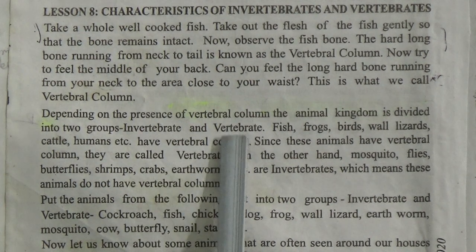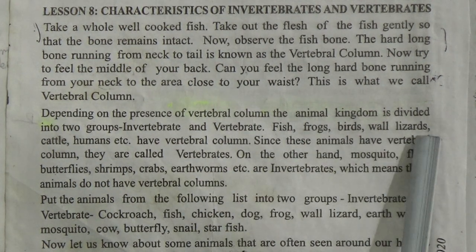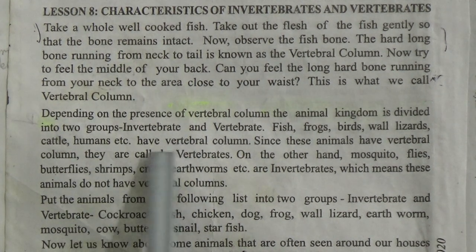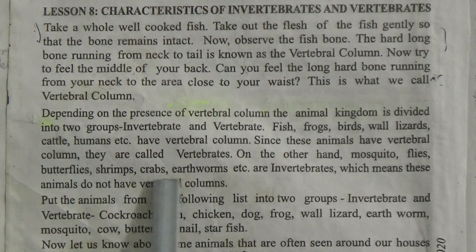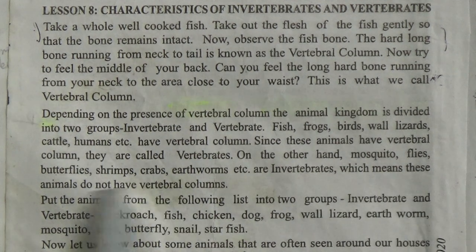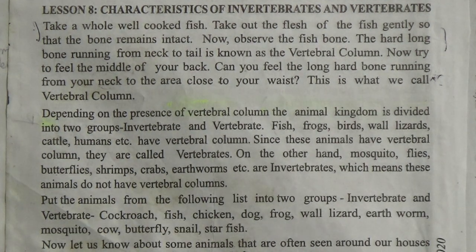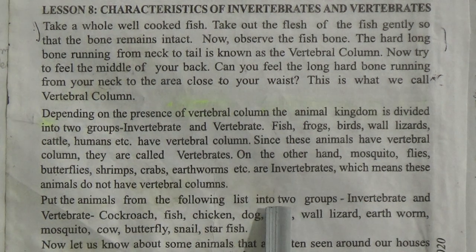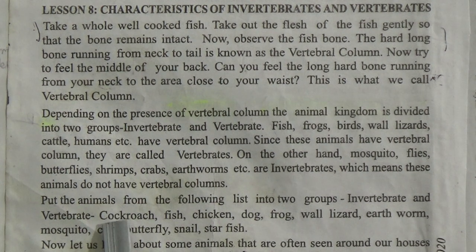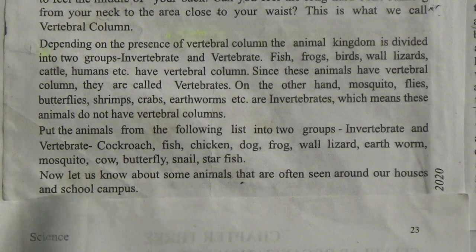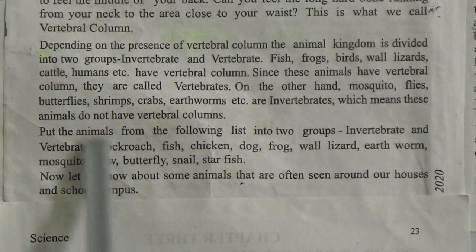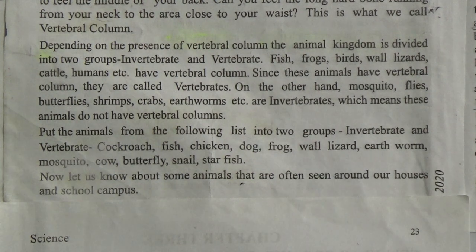Depending on the presence of a vertebral column, the animal kingdom is divided into two groups: invertebrate and vertebrate. Fish, frog, birds, wolf, lizard, cattle, human, etc. have a vertebral column, so they are called vertebrates. On the other hand, mosquito, flies, butterflies, shrimp, crabs, earthworms, etc. are invertebrates — these animals do not have a vertebral column. Now put the following animals into two groups: cockroach, fish, chicken, dog, frog, wild lizard, earthworm, mosquito, cow, butterfly, snail, and starfish. Separate them into vertebrate and invertebrate groups by yourself.